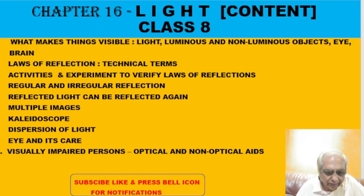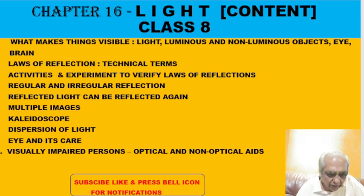There are two main essential things required: we should have normal eyesight and light from objects should fall in our eye. When light enters the eye, it forms an image on a screen called the retina, which is photoreceptive. From the retina, a nerve called the optic nerve goes to the brain, and this information is fed to the brain which interprets the signal that has come to the retina.